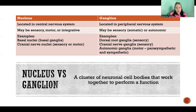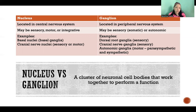We also have cranial nerve nuclei, which can be sensory or motor. Those are just a few examples, but there are hundreds of specific nuclei that have been identified throughout the brain and spinal cord.